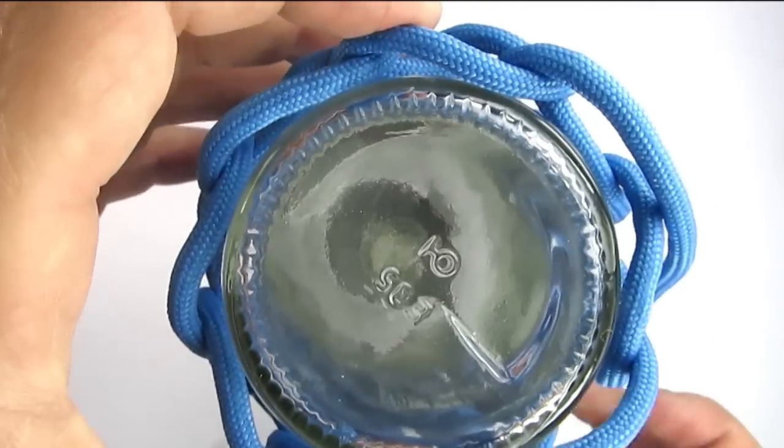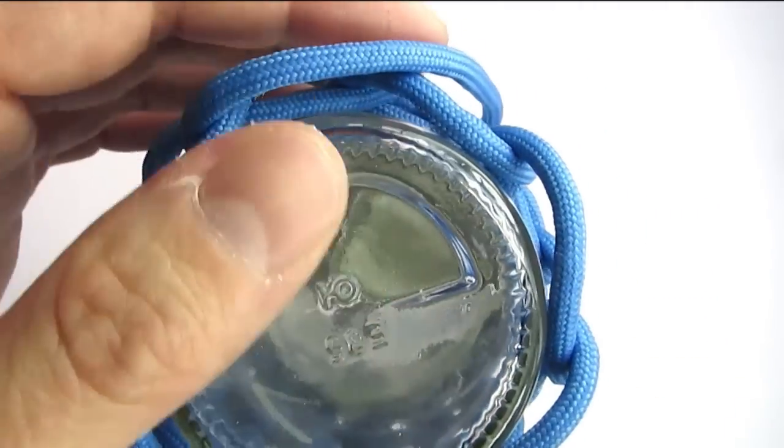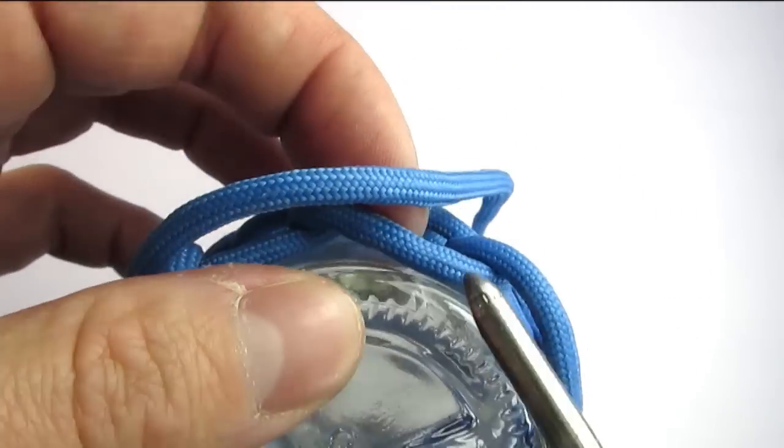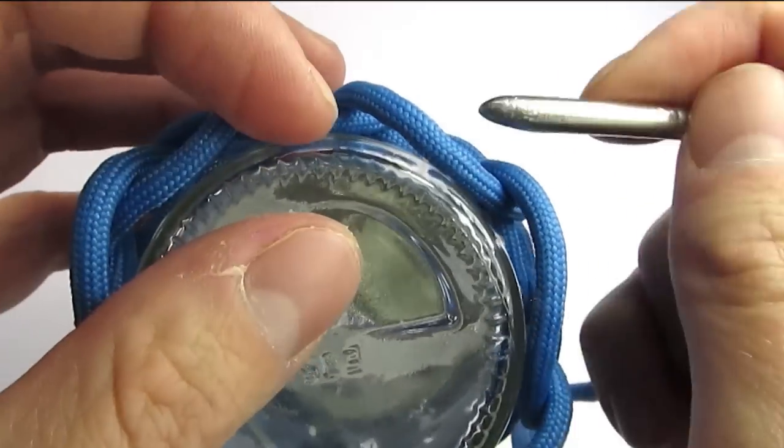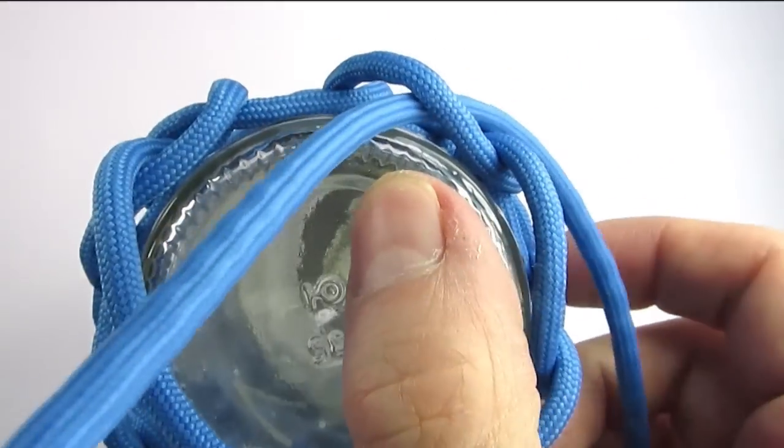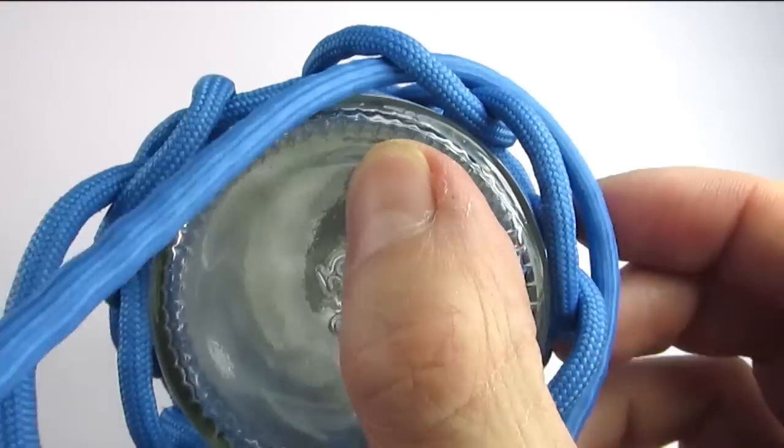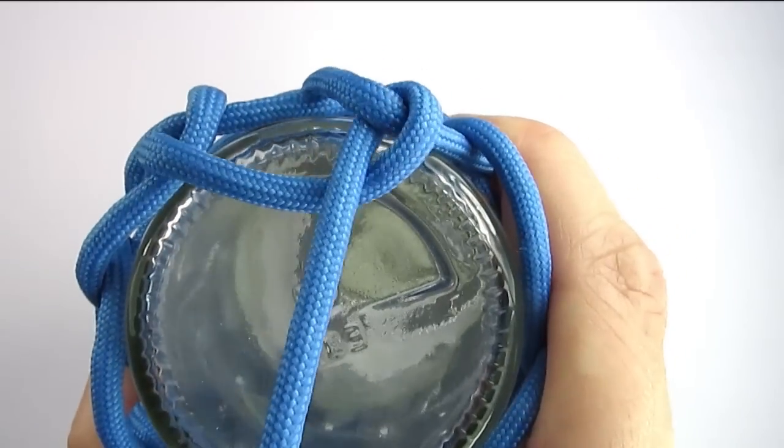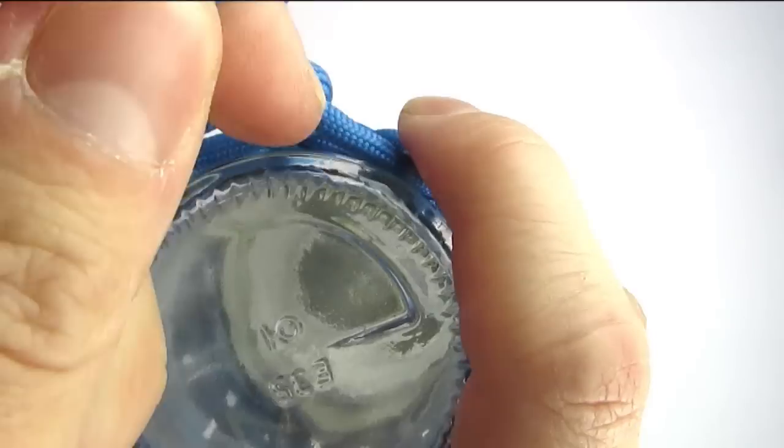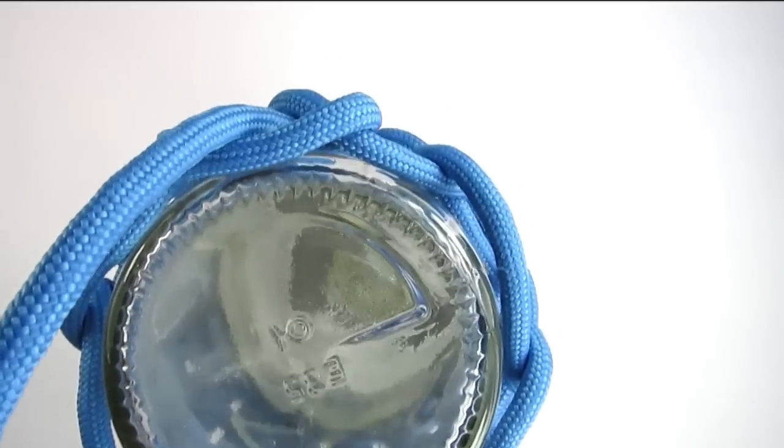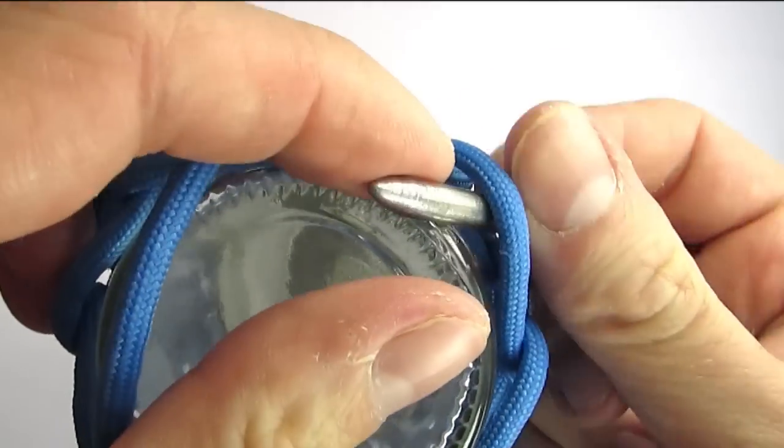Once you reach the bottom, it's time for our last step in making this bottle wrap, which is to again make another row on the edge of your wrap using the same technique that we used before. So we come in from the top and through the front of our working cord.